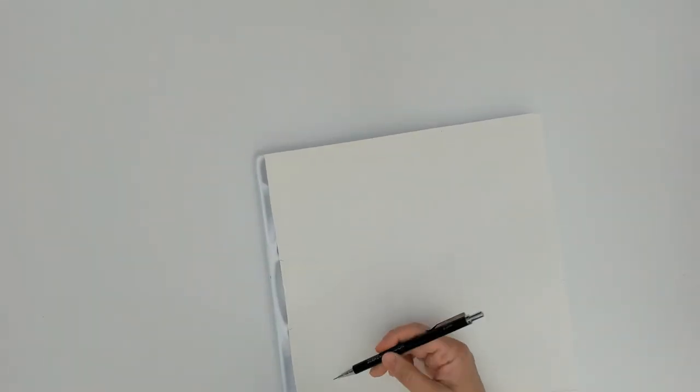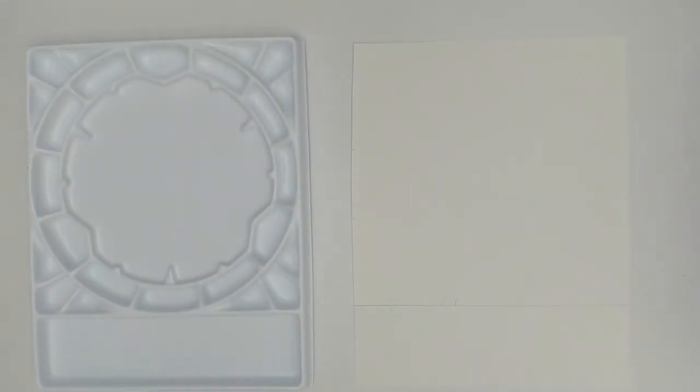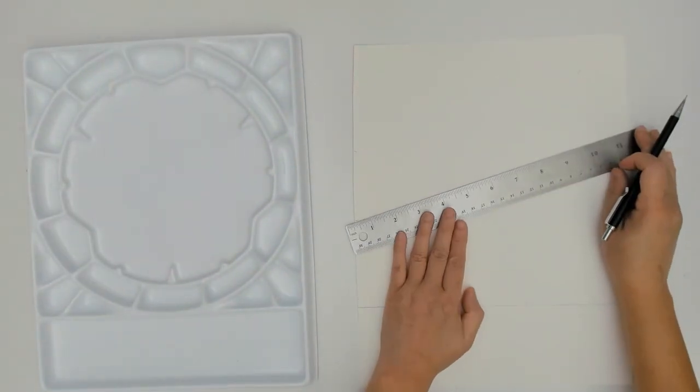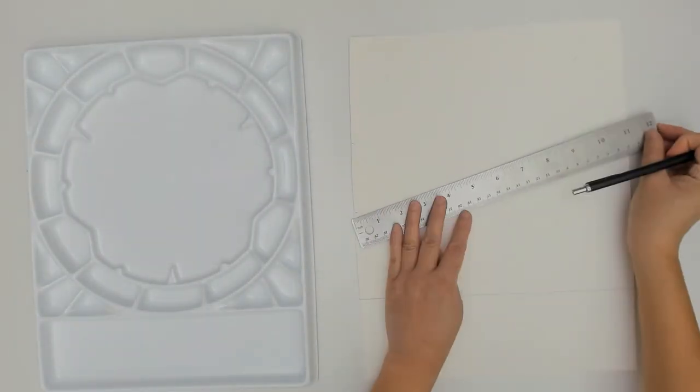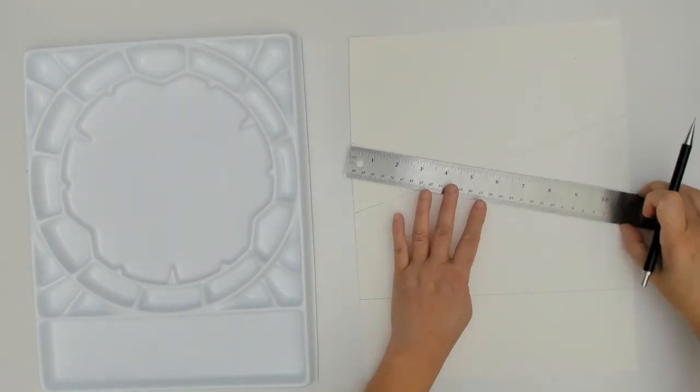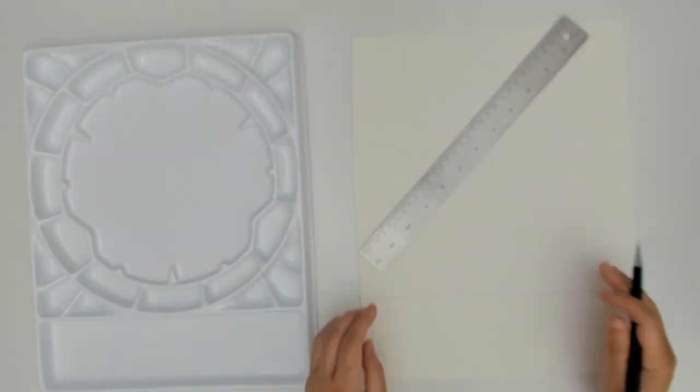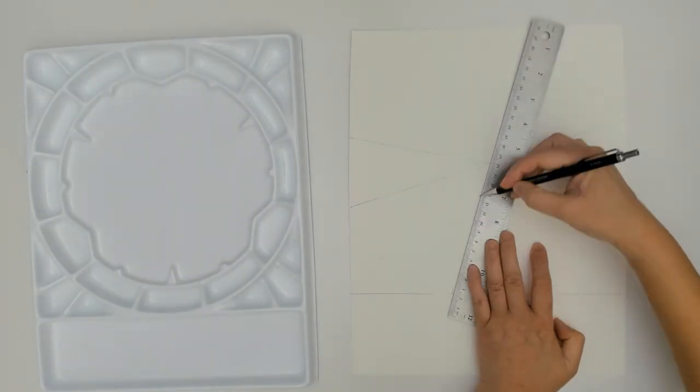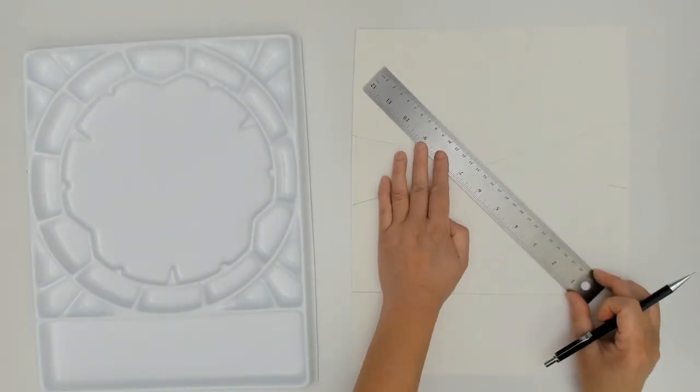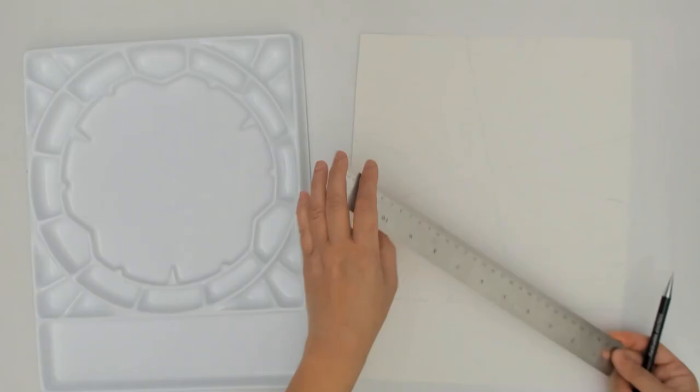With my pencil and ruler, I'm just marking out where all the wells are so I can draw lines to signify where they're located. Using my ruler, I'm just connecting those lines where I'm going to place my color swatches. I'm not going to bother with making the actual circle because I want to have a lot of space to put my color swatch in.